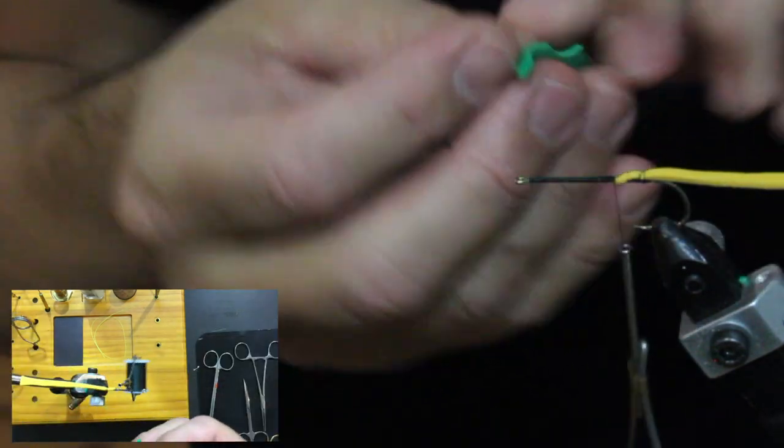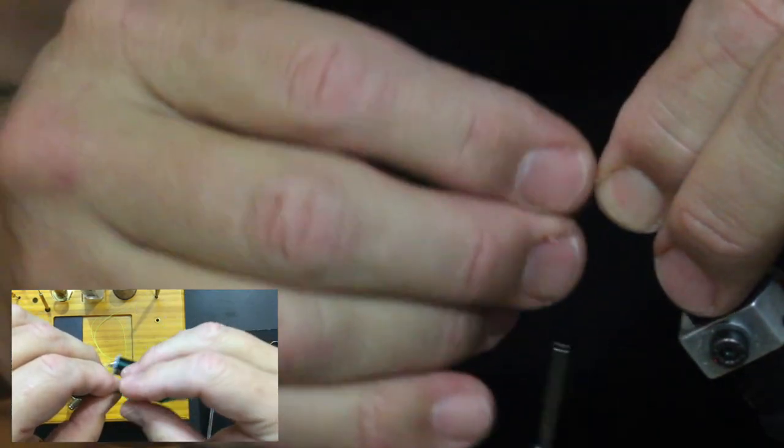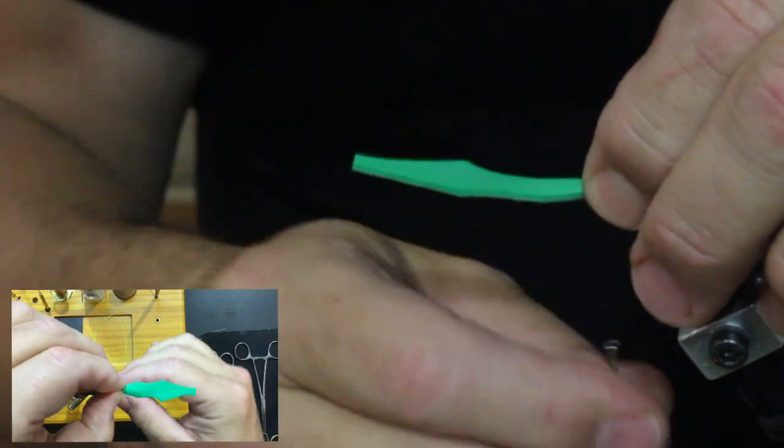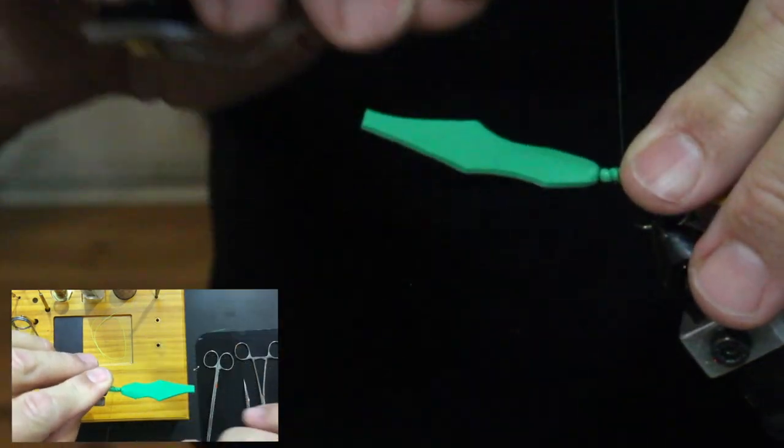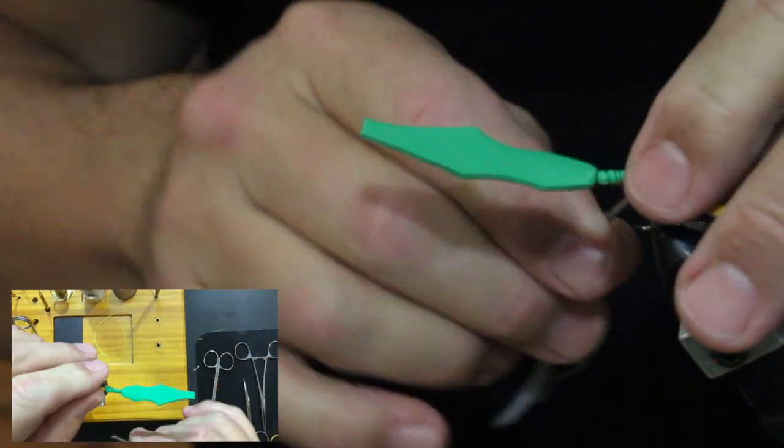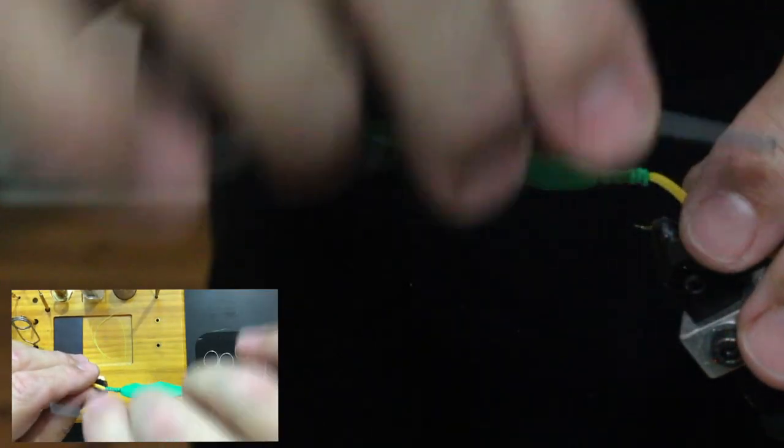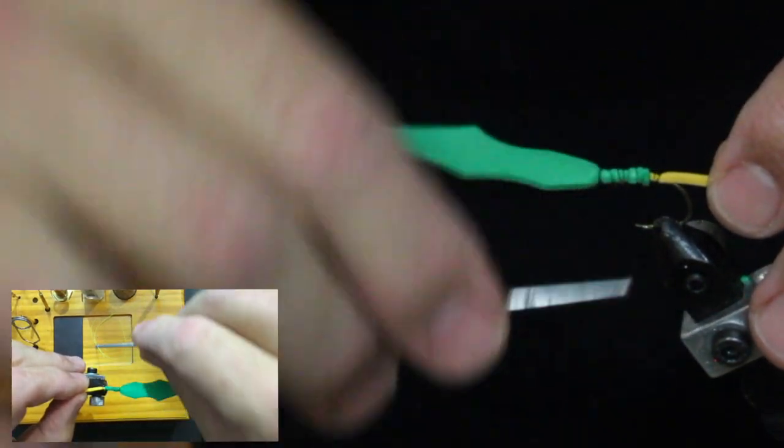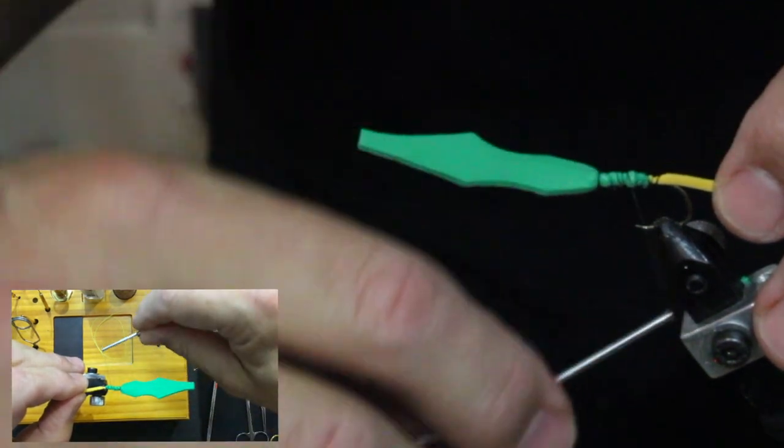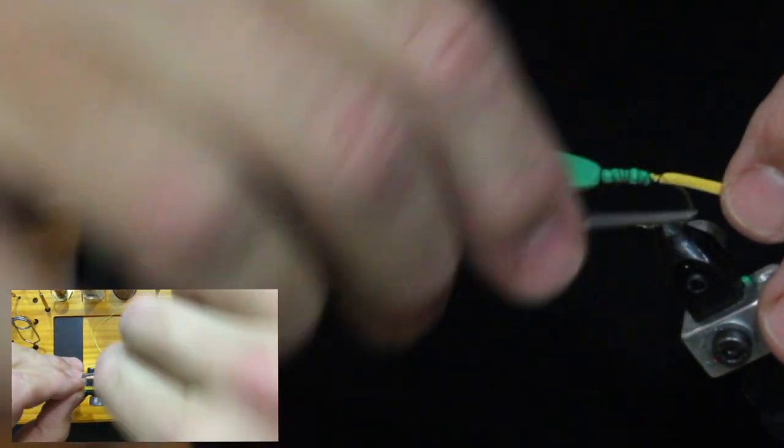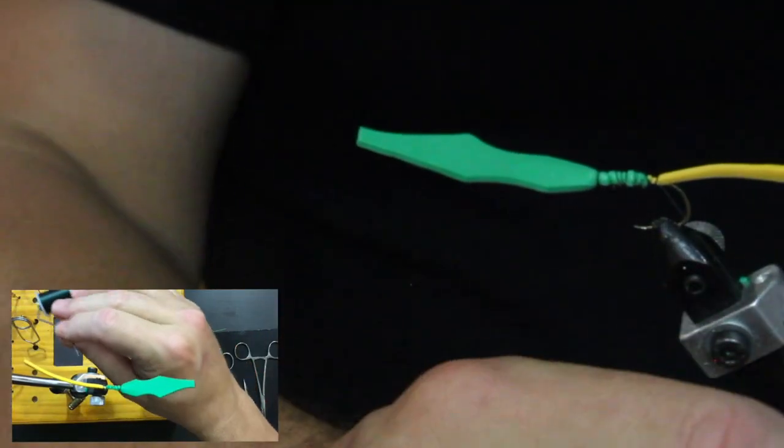We're going to get that right about to where we started threading it, come pinch it down. Come here, a couple wraps, go right over the super glue. It's going to do a nice job of holding everything in place. I'm going to take this right to the edge and get it out of the way.